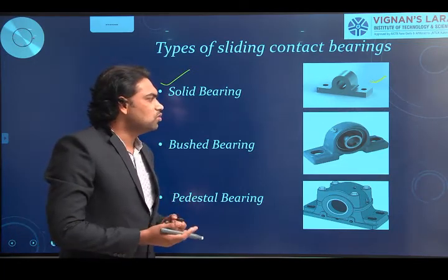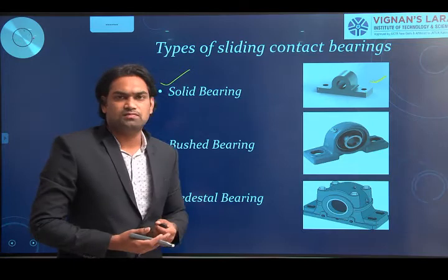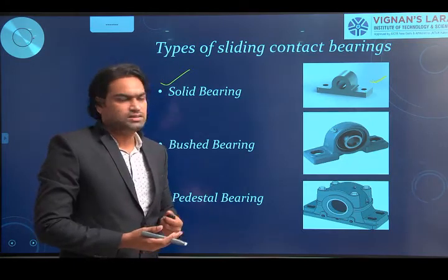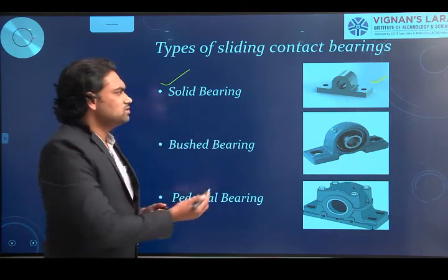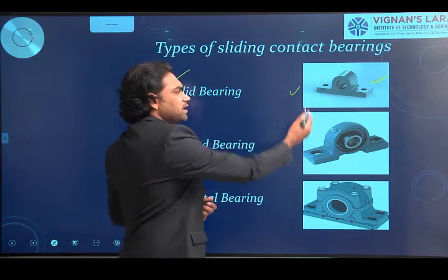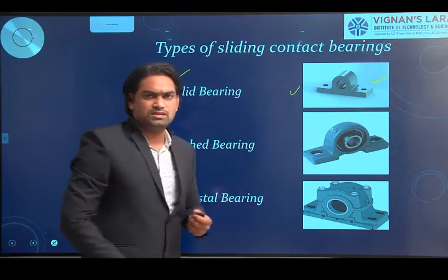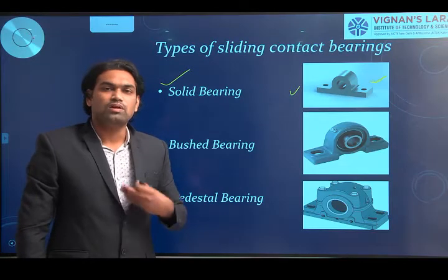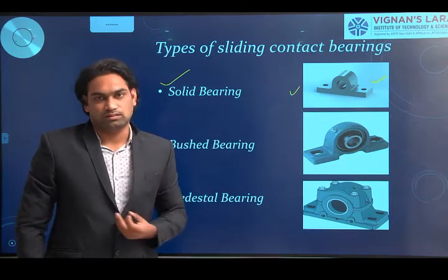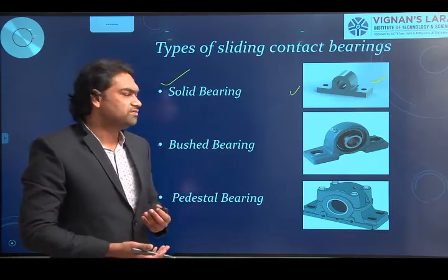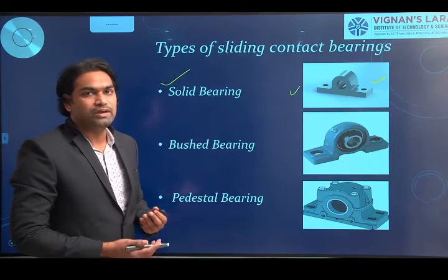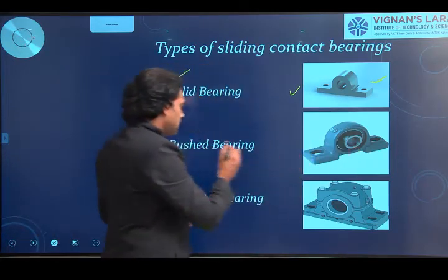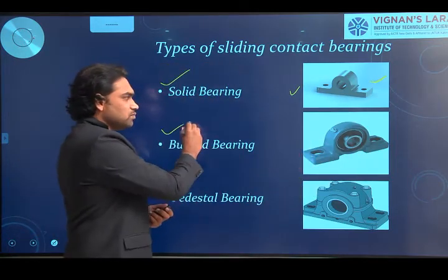In the solid bearing, there is no accommodation for wear changes — this is the basic type. If wear takes place, the bearing has to be replaced completely. To avoid this difficulty, we can introduce a bearing liner, giving us a type of bearing called a bushed bearing.